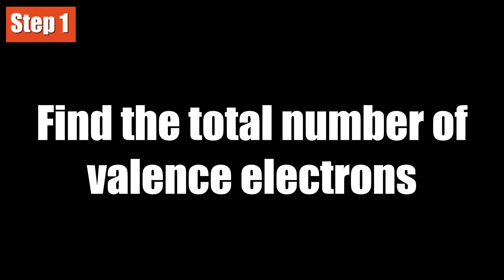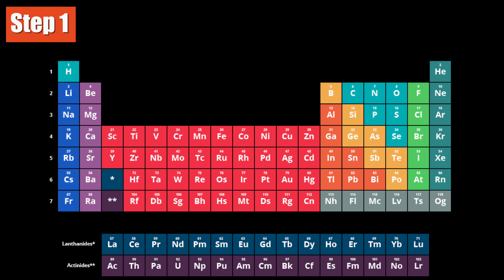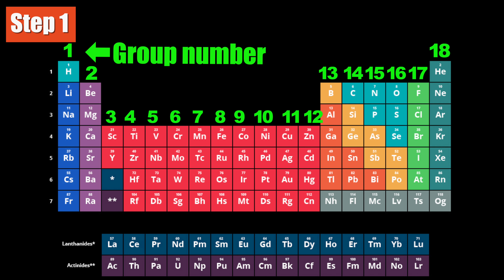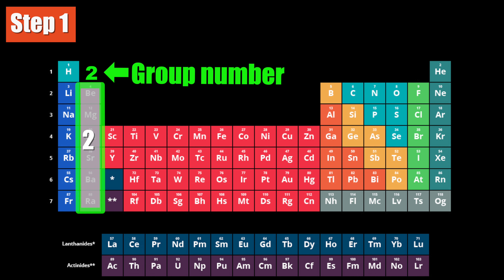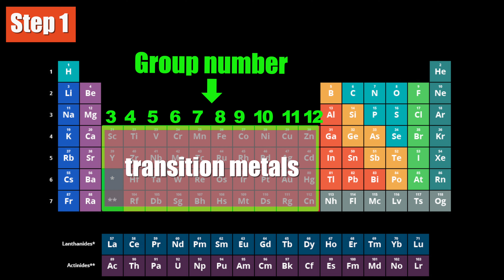Step 1: Find the total number of valence electrons in the molecule. In the periodic table, atoms are arranged based on the group number. Group 1 has 1 valence electron. Group 2 has 2 valence electrons. Groups 3 to 12, which are the transition metals, we will skip them for now.